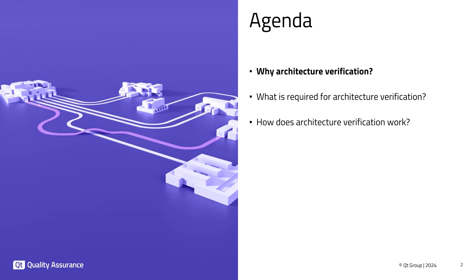We will first talk about software architecture, why it is a good idea to maintain a software architecture in your project and why it is important to do architecture verification for this architecture. Then in the second part, we will talk about the necessary steps for doing architecture verification. And in the third part, we will talk about how architecture verification with the Axivian Suite works and what kind of results you can expect from it.